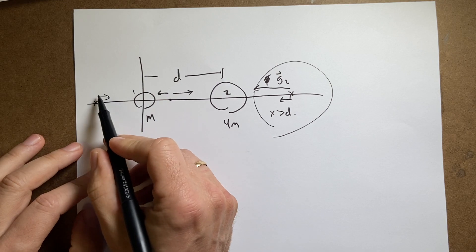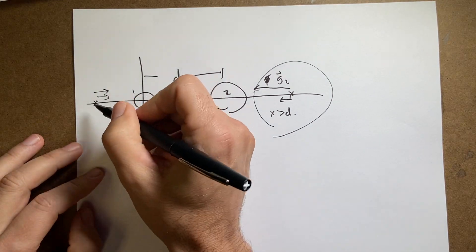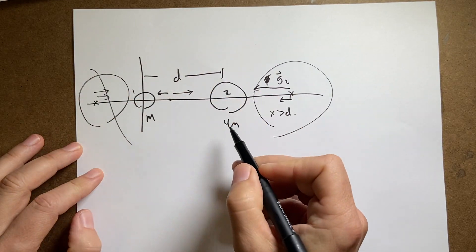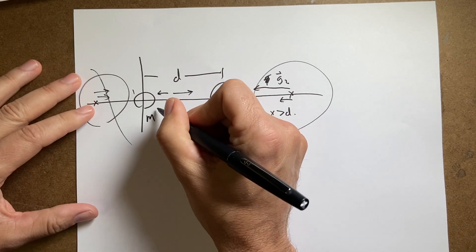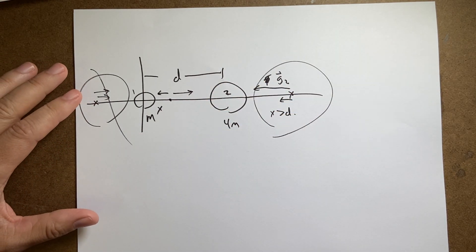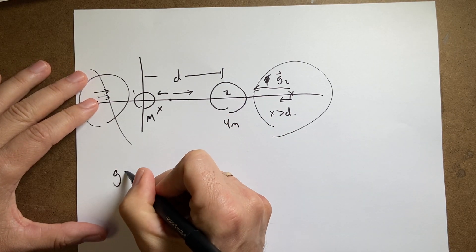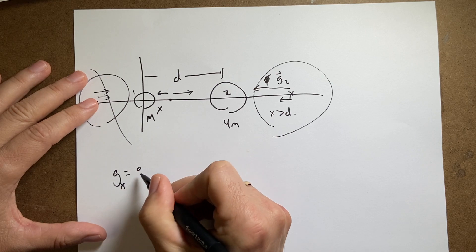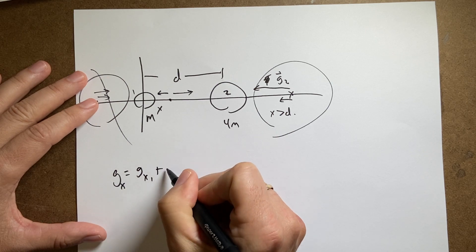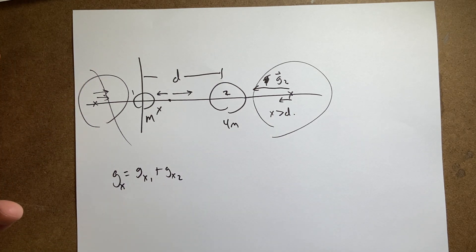Over here, now again, both the gravitational forces are in the same direction. They can't cancel. So I'm only in this region right there. So let's call this distance x. And let's get an expression for the gravitational field. So g equals gx equals gx1 plus gx2. So just in the x direction.